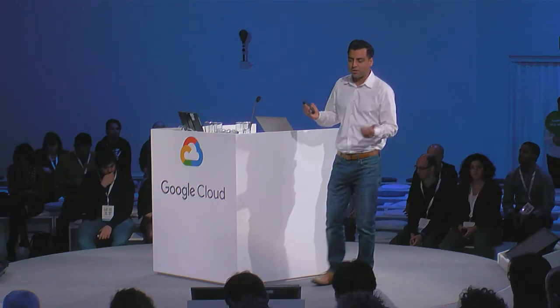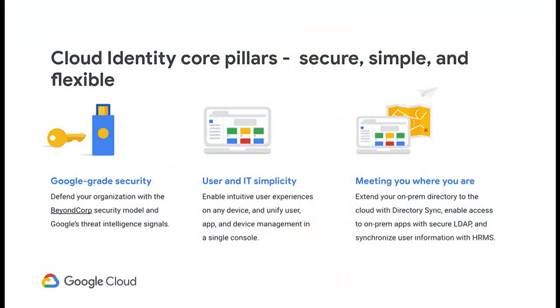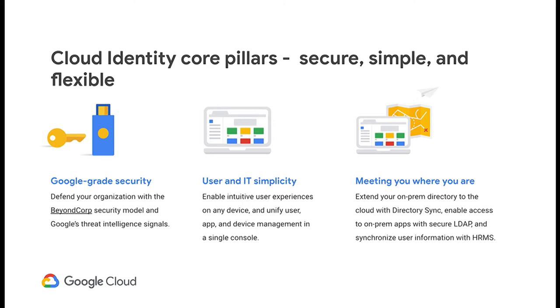Let's talk through the three core pillars of Cloud Identity. First, it helps you secure your data, applications, users, and devices by providing tools like single sign-on, MFA, context-aware access, and so on — enabling you to deploy the BeyondCorp security model in your organization. It also helps simplify your IT and end-user experience, and we want to meet you where you are and integrate with your on-prem systems as well.